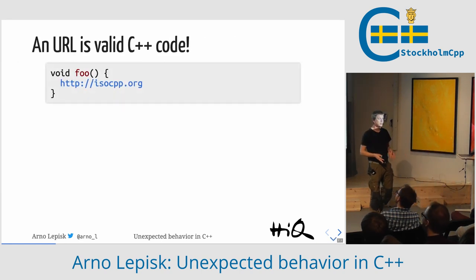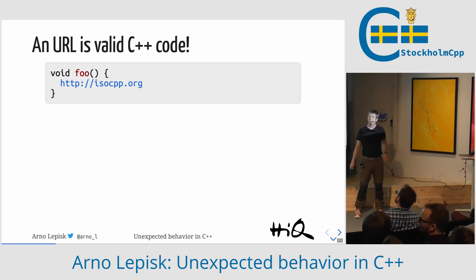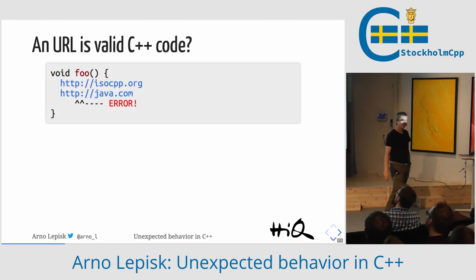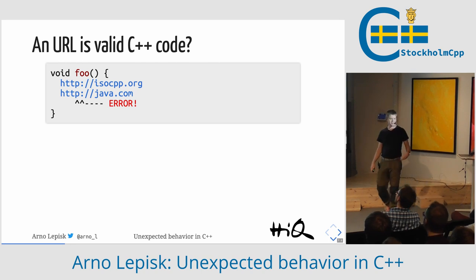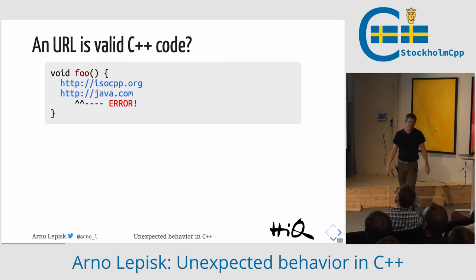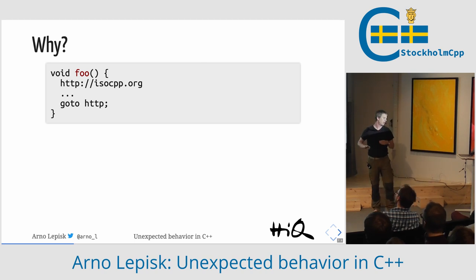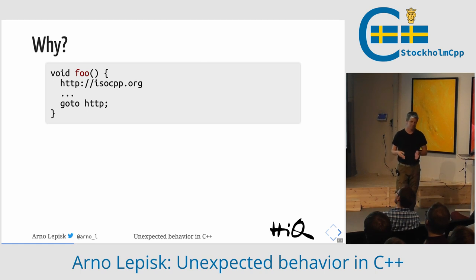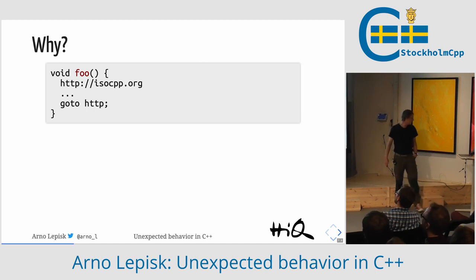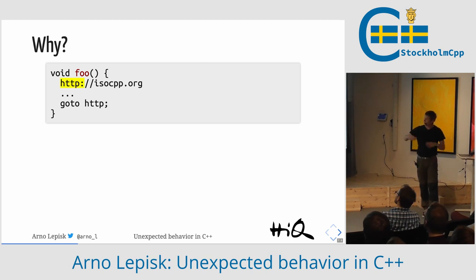Did you know that a URL is valid in C++ code? This will compile fine. But if we add something after it, we get an error. The suggestion was to use HTTPS — that works fine. What's happening is a label and a comment. The colon makes it a label, and the double-slash starts a comment. So this would not pass a code review for several reasons — goto, for example.